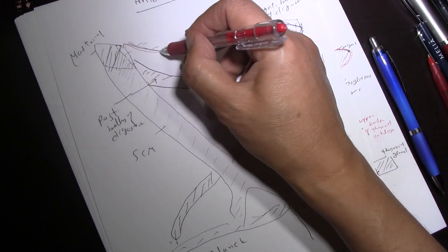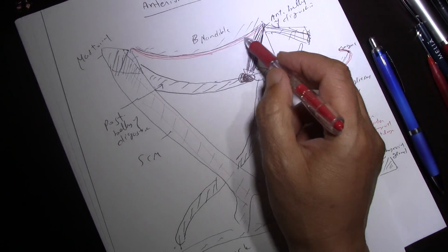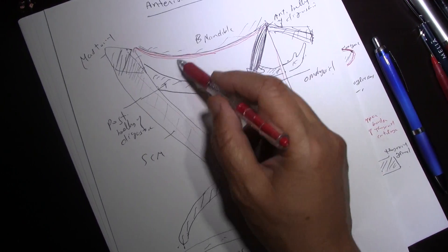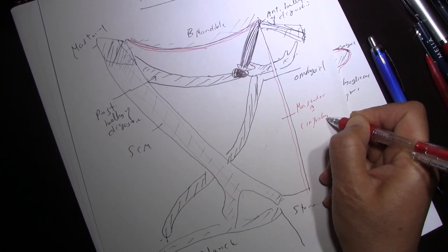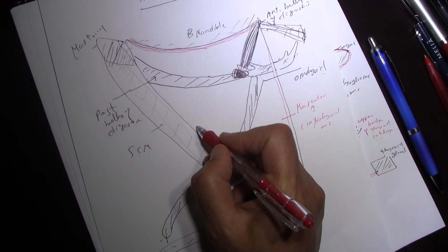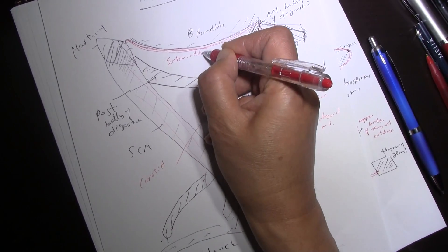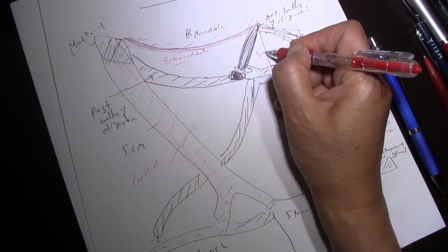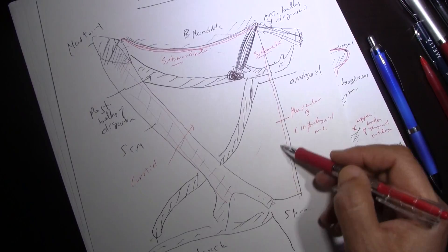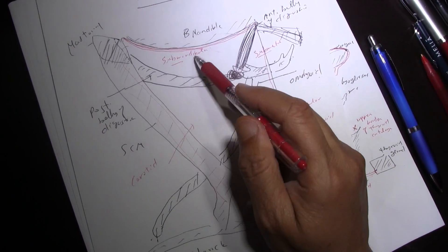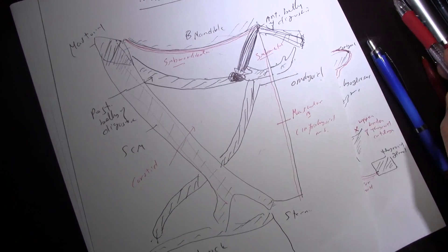Now if you look at the anterior triangle, which is bounded by the mandible, sternocleidomastoid, and the midline of the neck, you will see that it is divided into four triangles. This triangle is the muscular triangle, this one is the carotid triangle because it contains the carotid arteries, this one is the submandibular triangle, and the fourth is the submental triangle near the symphysis menti of the mandible.